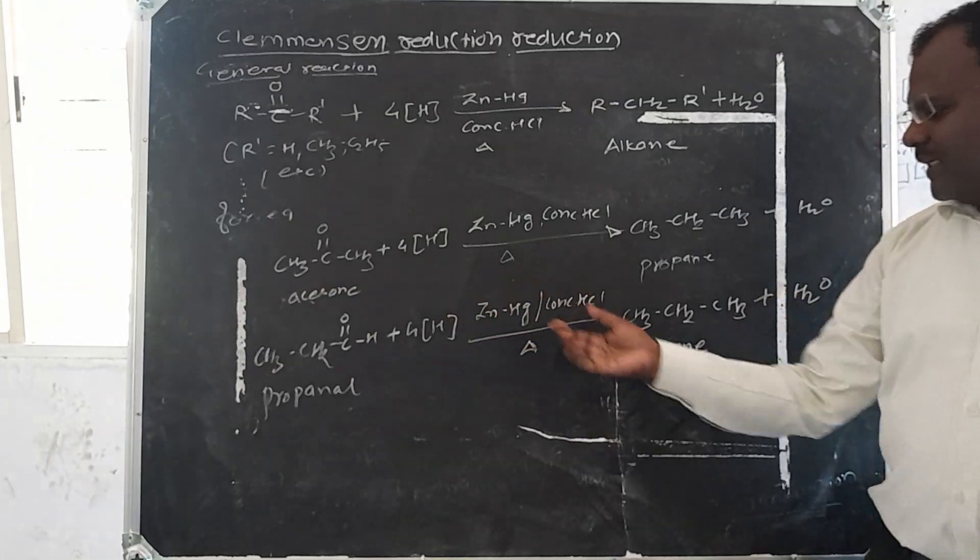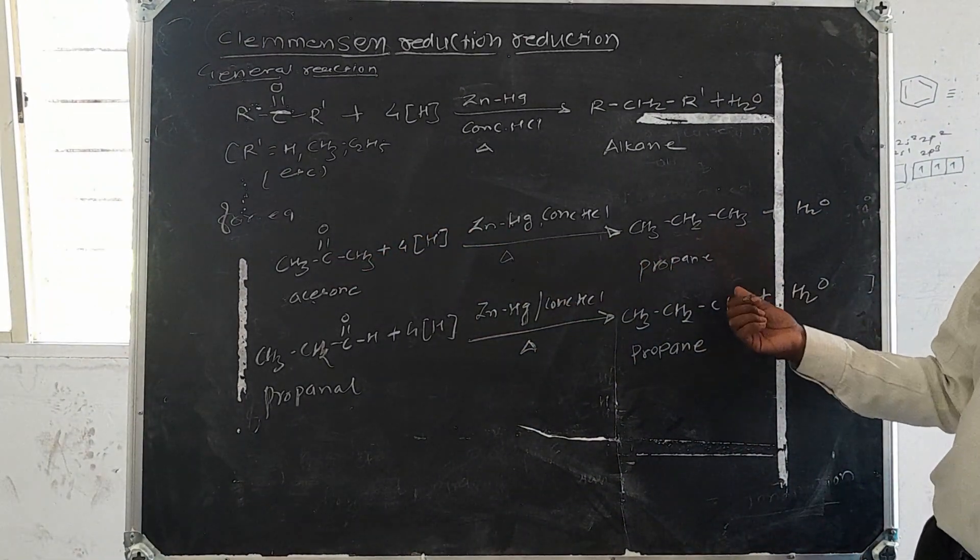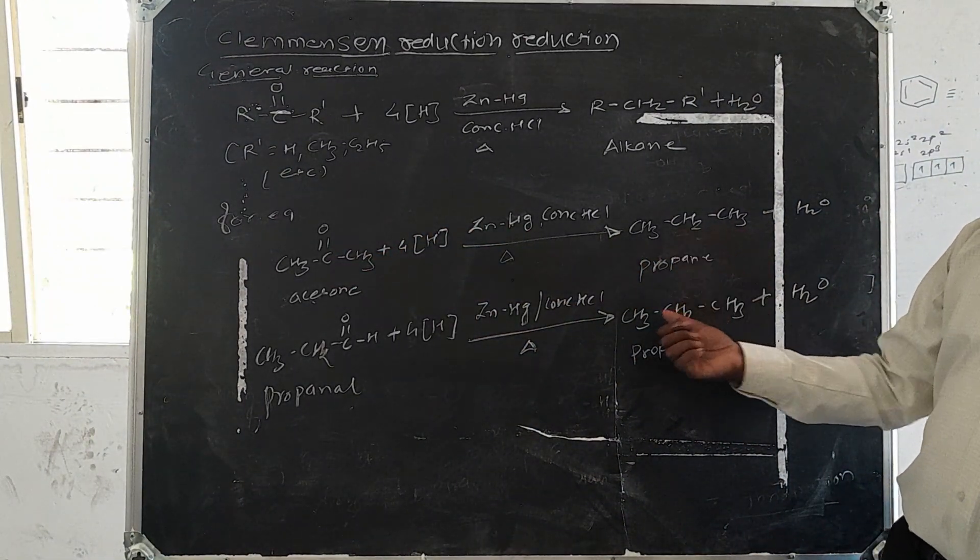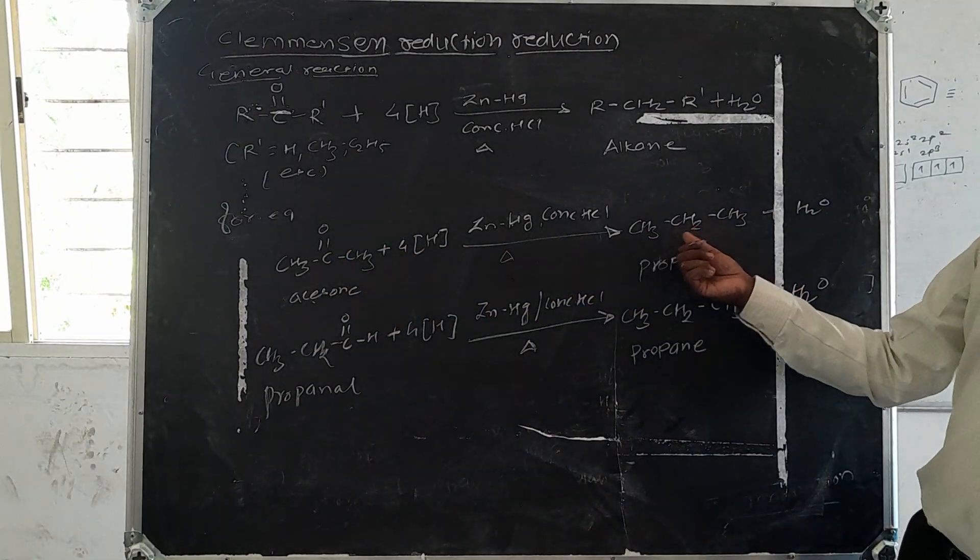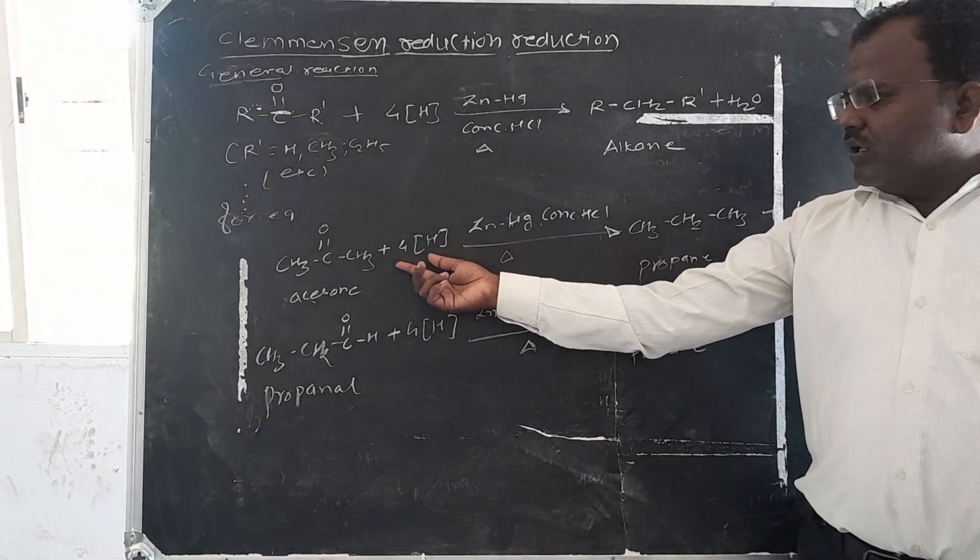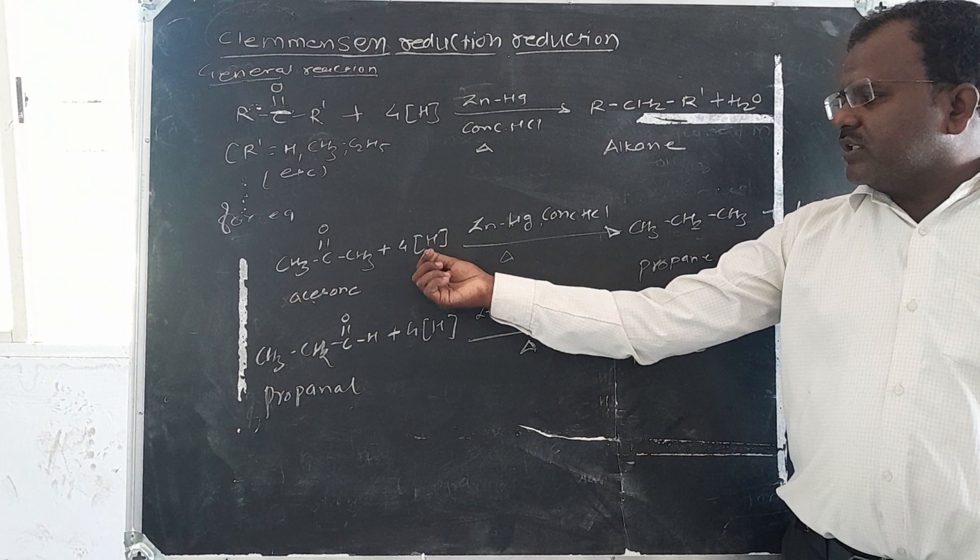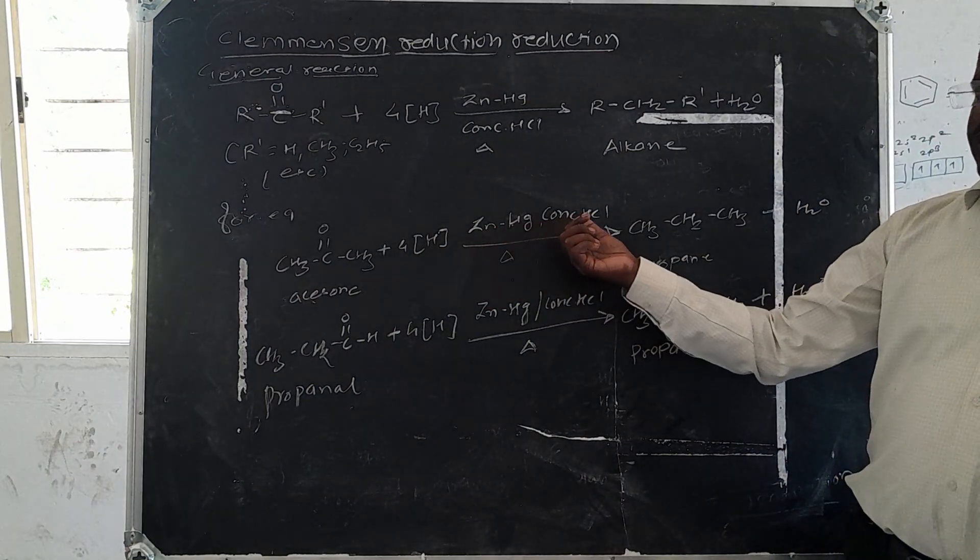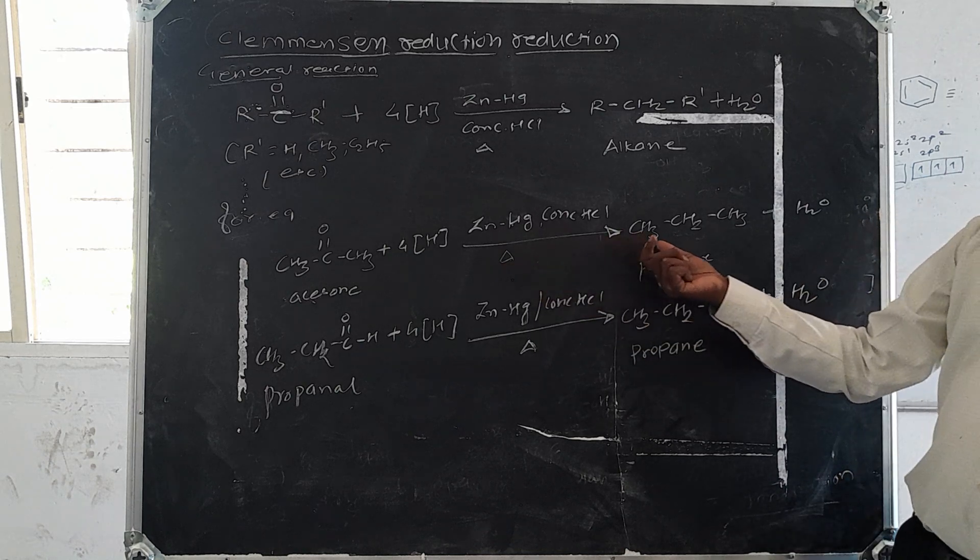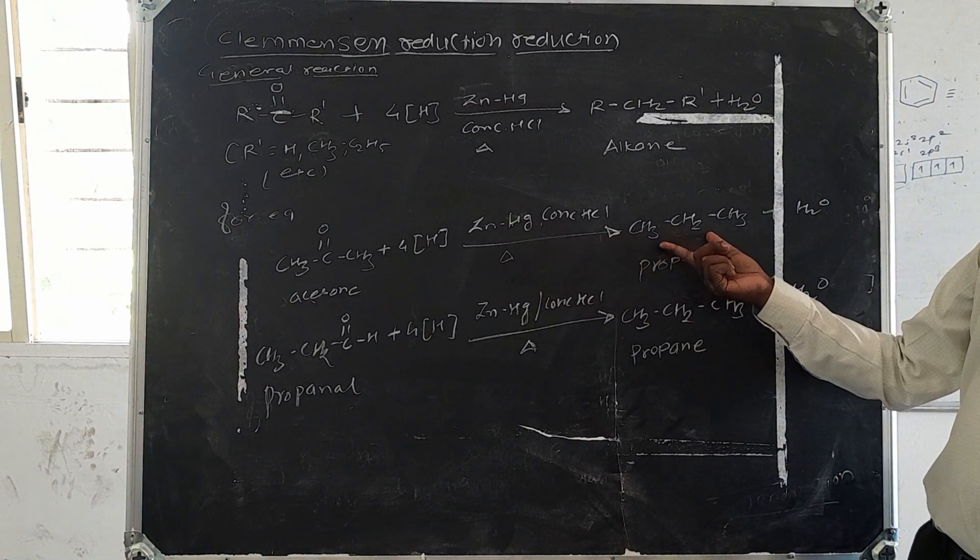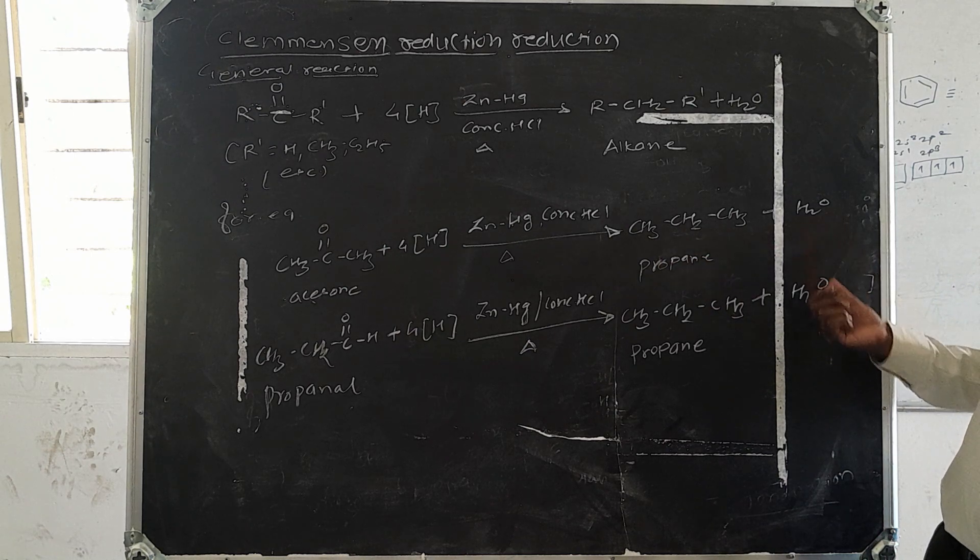The carbonyl group is reduced to form hydrocarbons. Here, the carbonyl group CH3-CO-CH3 reacts with hydrogen in the presence of zinc amalgam, concentrated HCl, and some amount of heat. Then the formation of propane and water occurs.